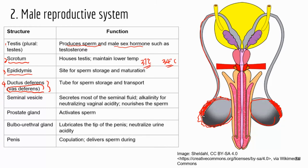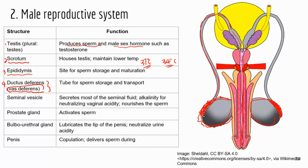The sperm is then going to travel through a duct called ductus deferens, or vas deferens — it transports sperm. After the ductus deferens, there's an ejaculatory duct, and then the sperm goes through the urethra. We talked about urethra in the urinary system. In males, the urethra goes through the penis, and the urethra transports both urine and sperm.